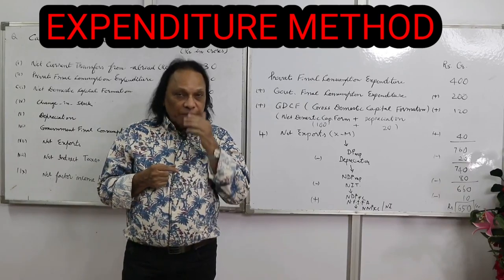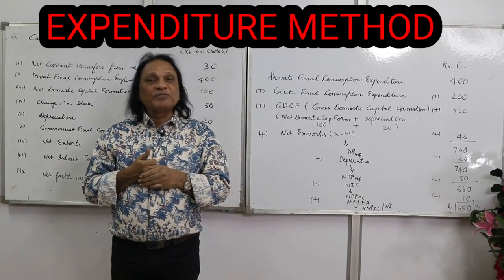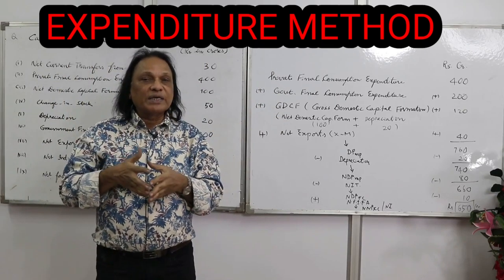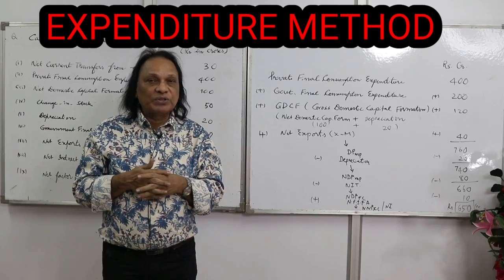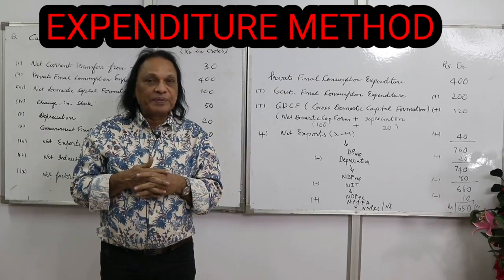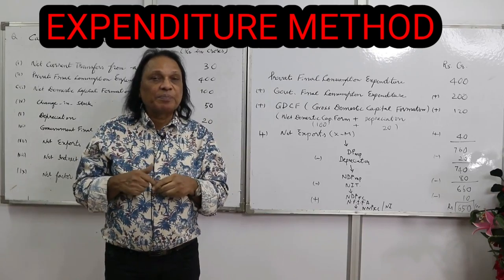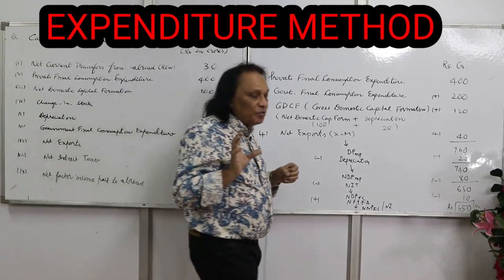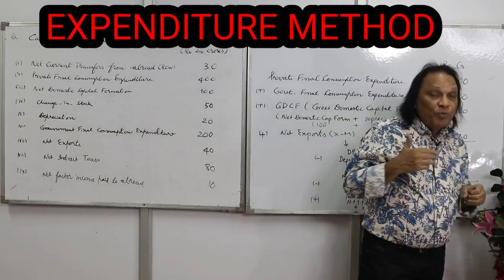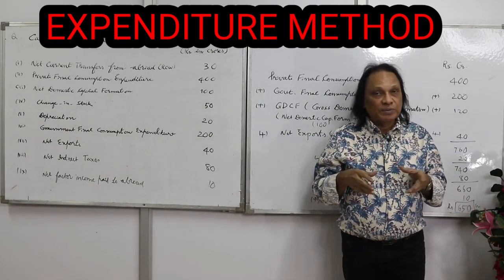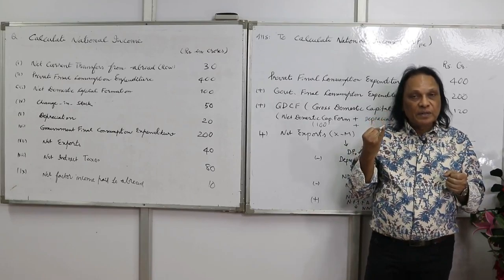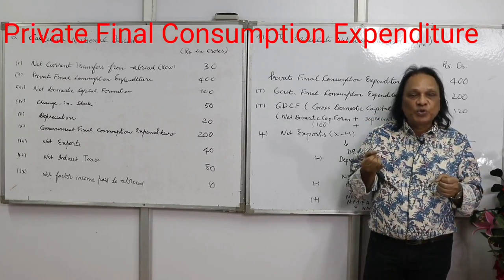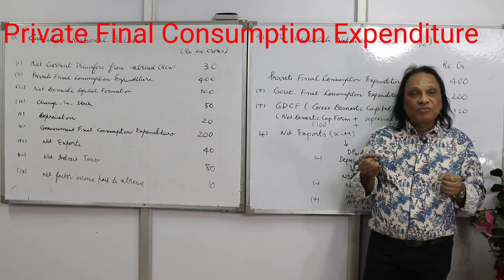Maybe you get a numerical for six marks. It is too simple. Before you venture to do the numericals, understand the formula. In the expenditure method, we take all the expenditures in the economy during an accounting year to obtain GDP at MP — gross domestic product at market price.